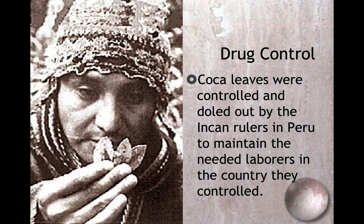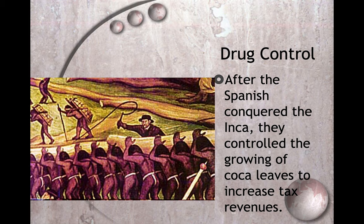I've actually been to Peru and walked the Inca Trail to some extent. They would carve huge stones — I'm not sure how they moved them — and so the whole Incan empire was built on this labor. Who knows if it was slave labor or not, but one way they were paying workers was with coca leaves. After the Spanish conquered the Inca, they controlled the growing of coca leaves to increase tax revenues. The people would work themselves to death — they'd be using the coca and sent down into the mines.